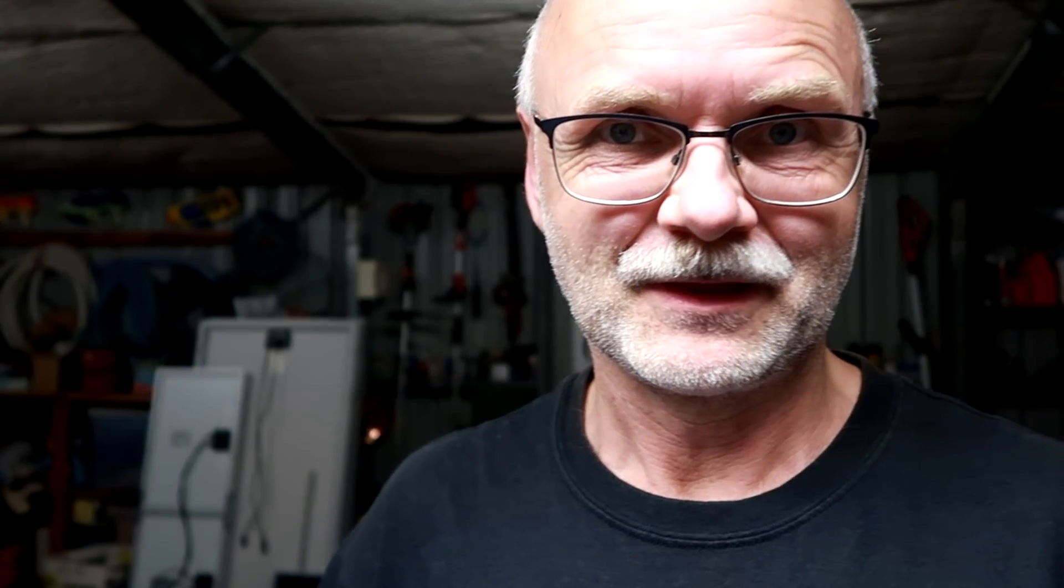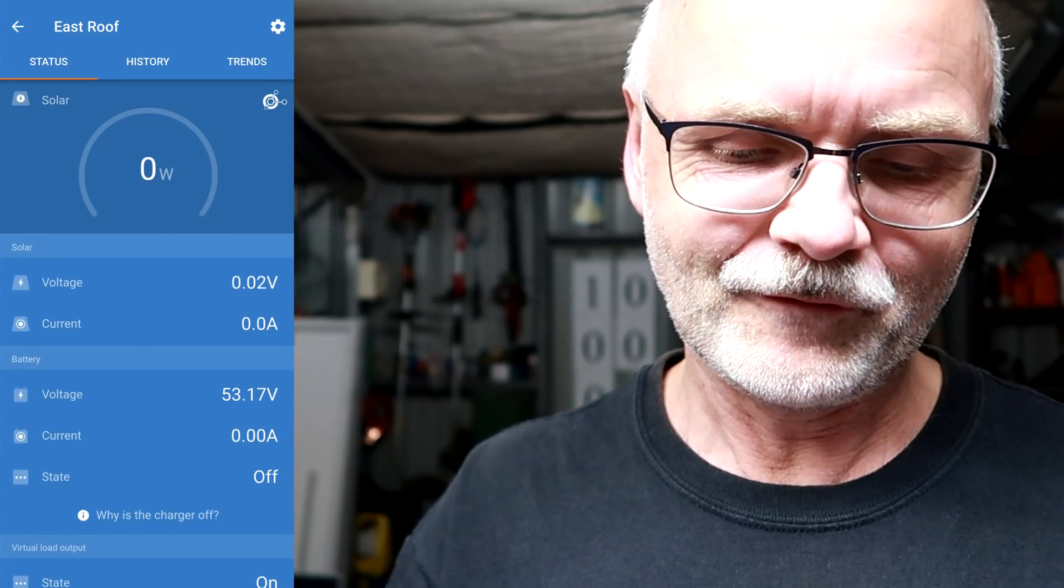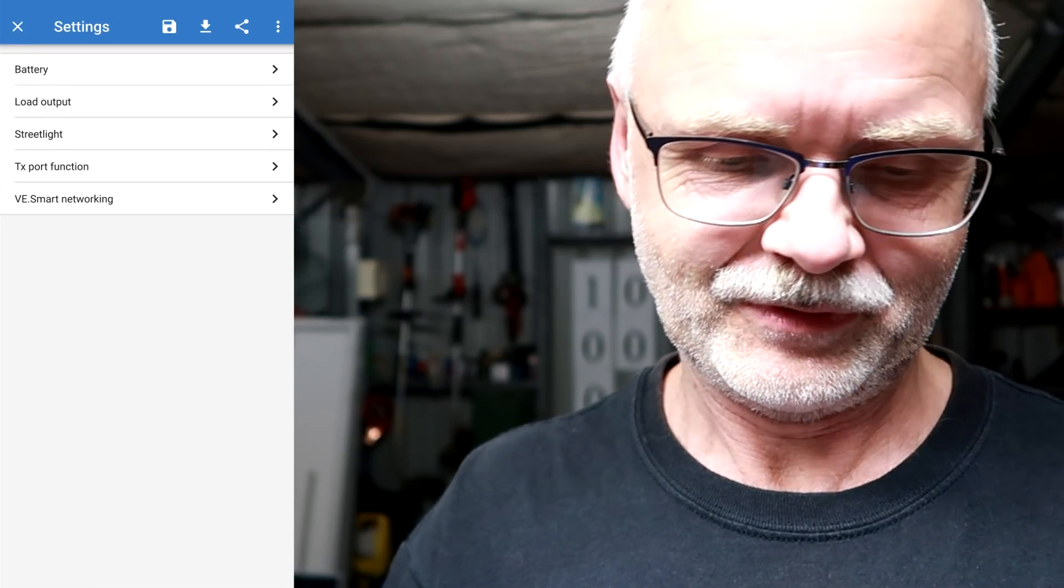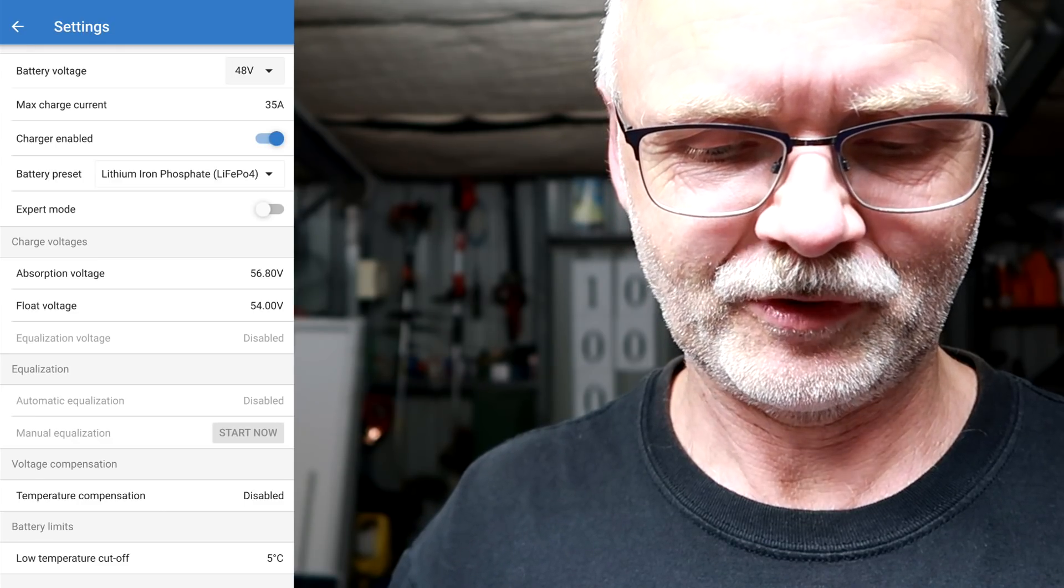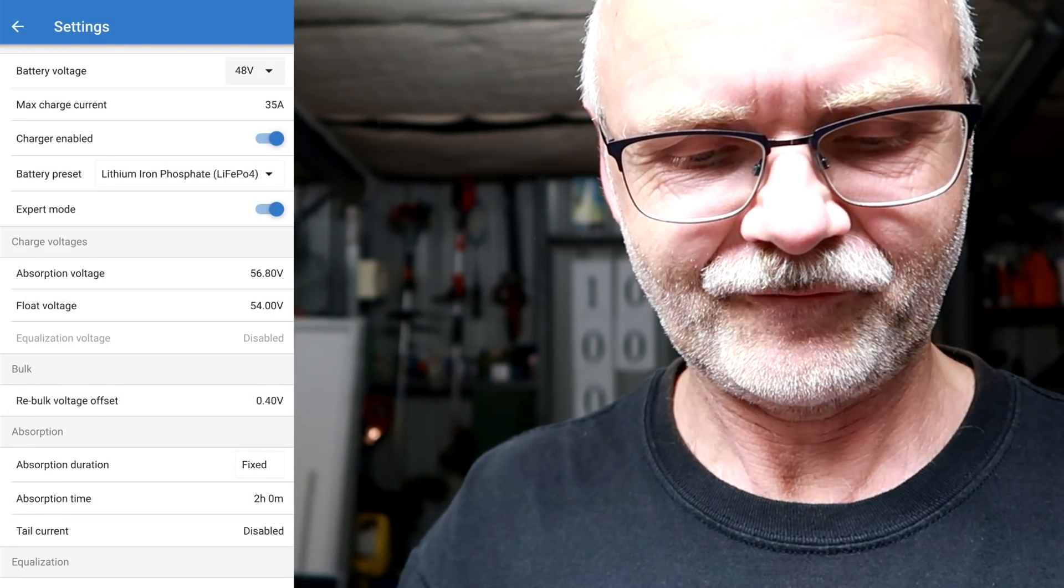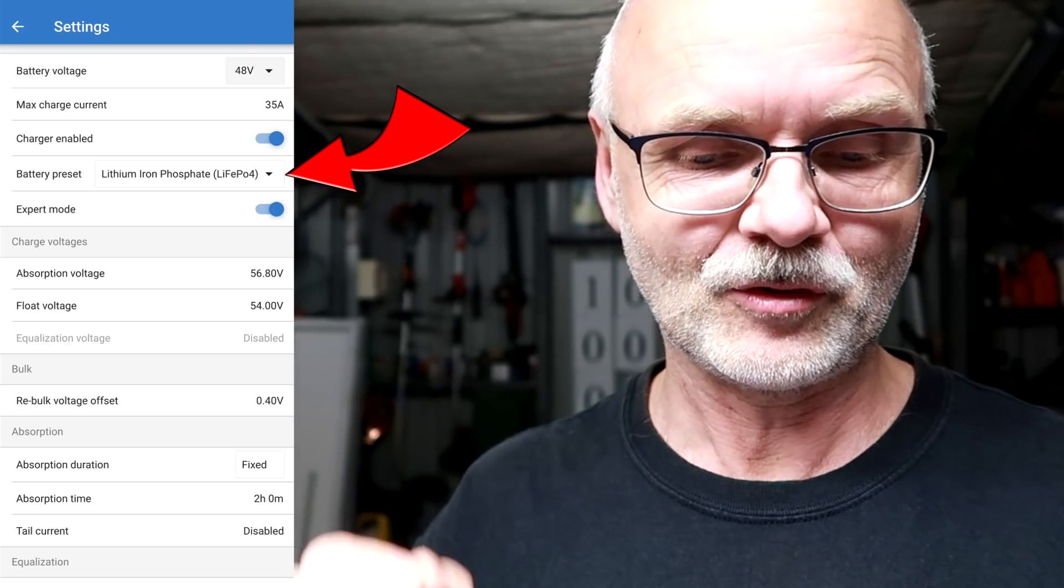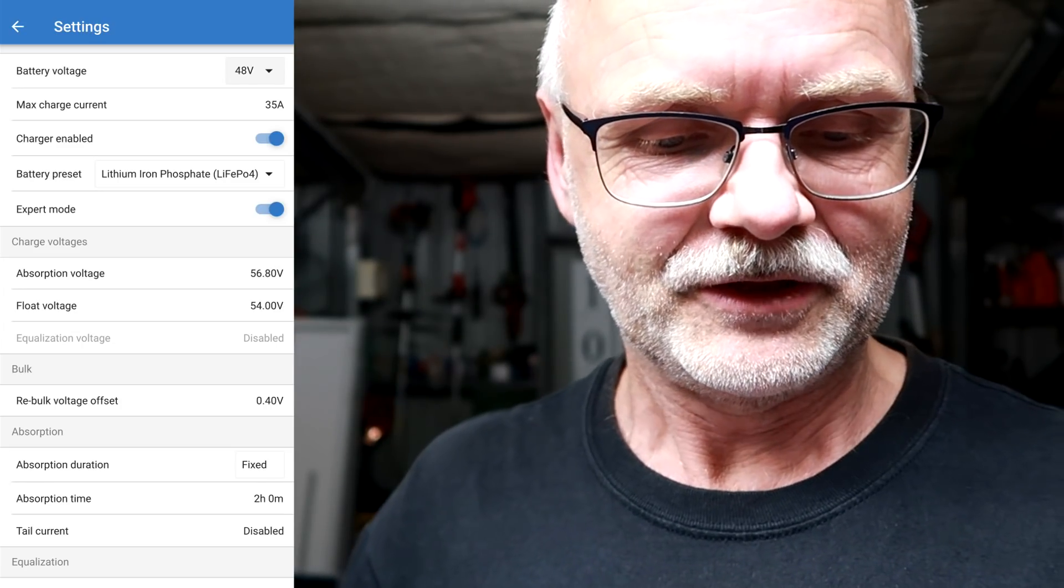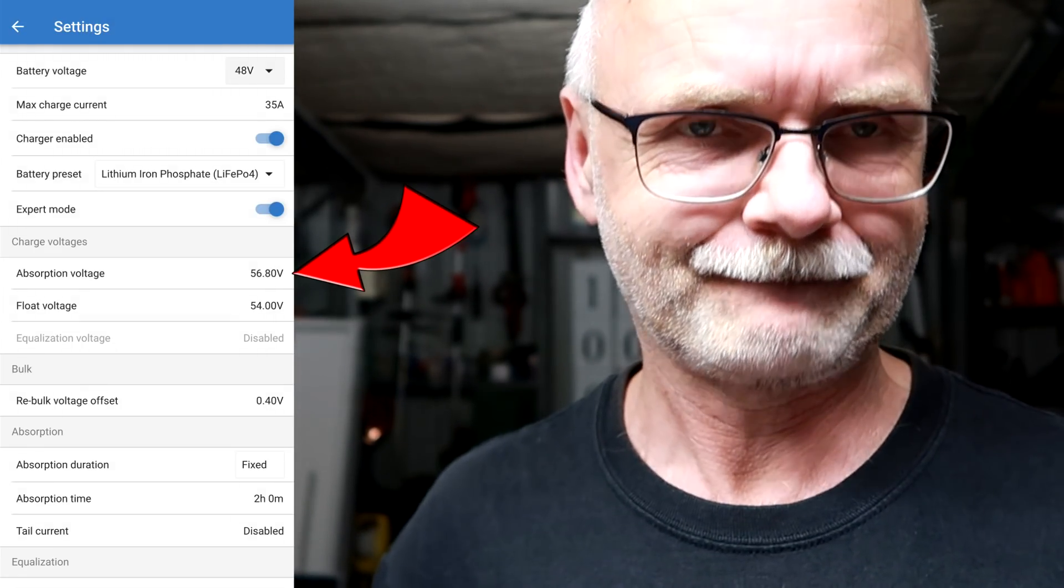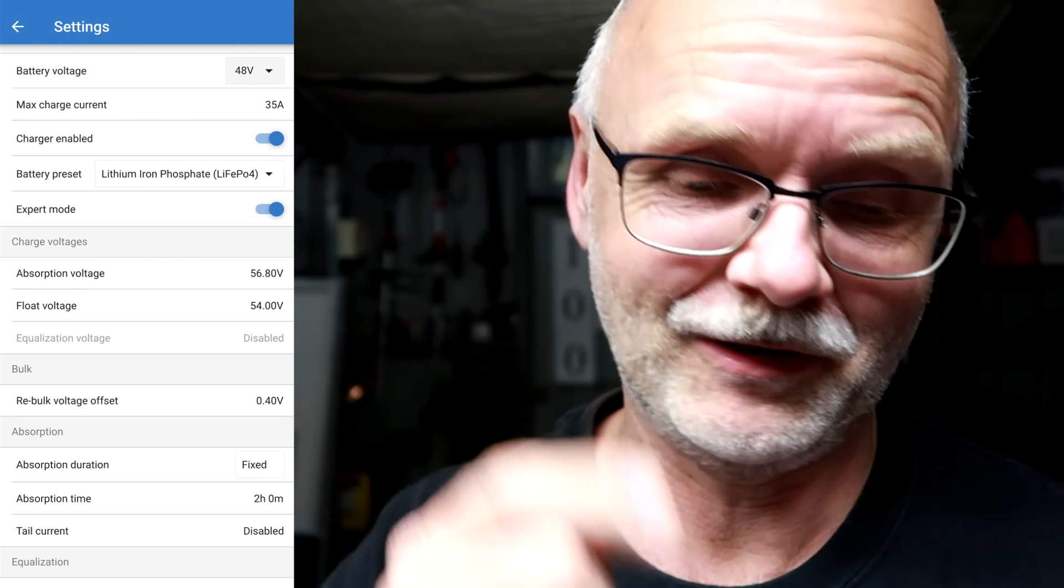Okay, let's do a video. Here I want to show you something. This is my east roof solar charge controller. We go into settings, into battery, and turn on the expert mode. As you can see here from the battery preset, this is the original Victron lithium-iron phosphate LiFePO4 profile. It charges the battery to 56.8 volts, which is 3.55 volts per cell.